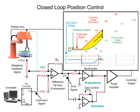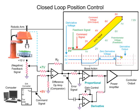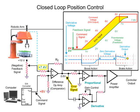As the command signal stops changing, the robotic arm continues to move with a decreasing error signal. As the error is reduced, the derivative amplifier output voltage changes polarity and cancels the proportional voltage. When this occurs, the polarity of the power amp is reversed, creating a brake condition to prevent overshooting the desired position. As the arm continues in motion, the feedback voltage nears the command voltage, the error signal from the difference op-amp decreases, and the arm motor speed decreases.